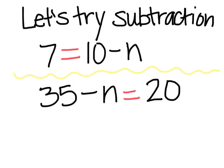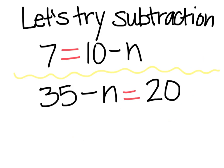Let's use what we know now in subtraction. Seven is equal to ten take away N. Ten is my whole thing — I don't know what this missing part is, but I do know what this part is. If I have ten, how much do I have to take away to get seven? N should be equal to three. Because if I put three in the spot where N is, it's going to equal seven — ten take away three is seven.